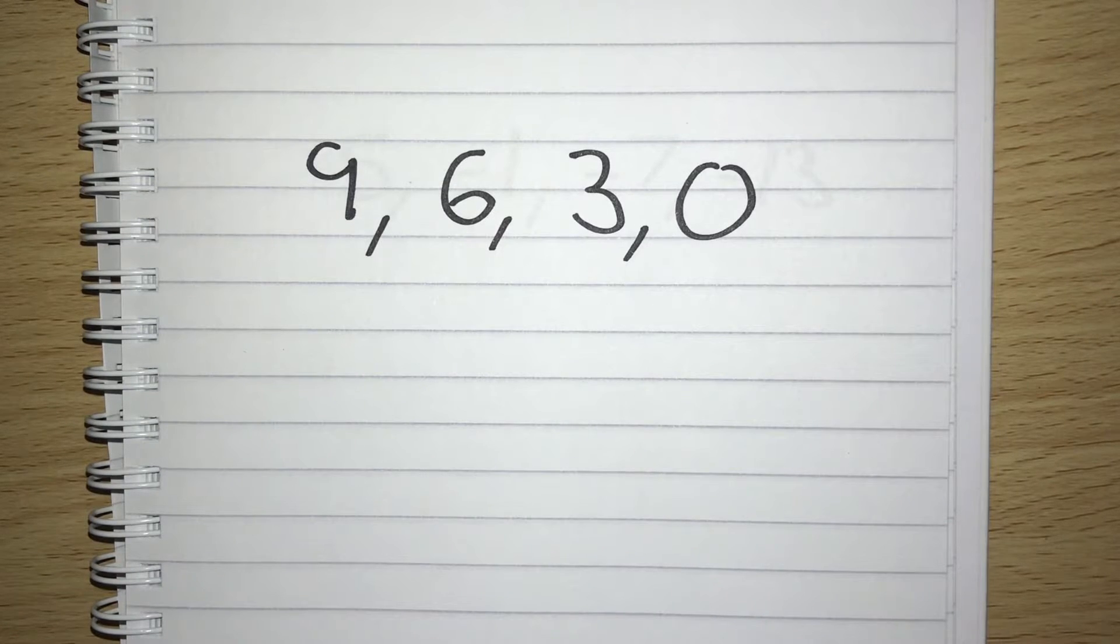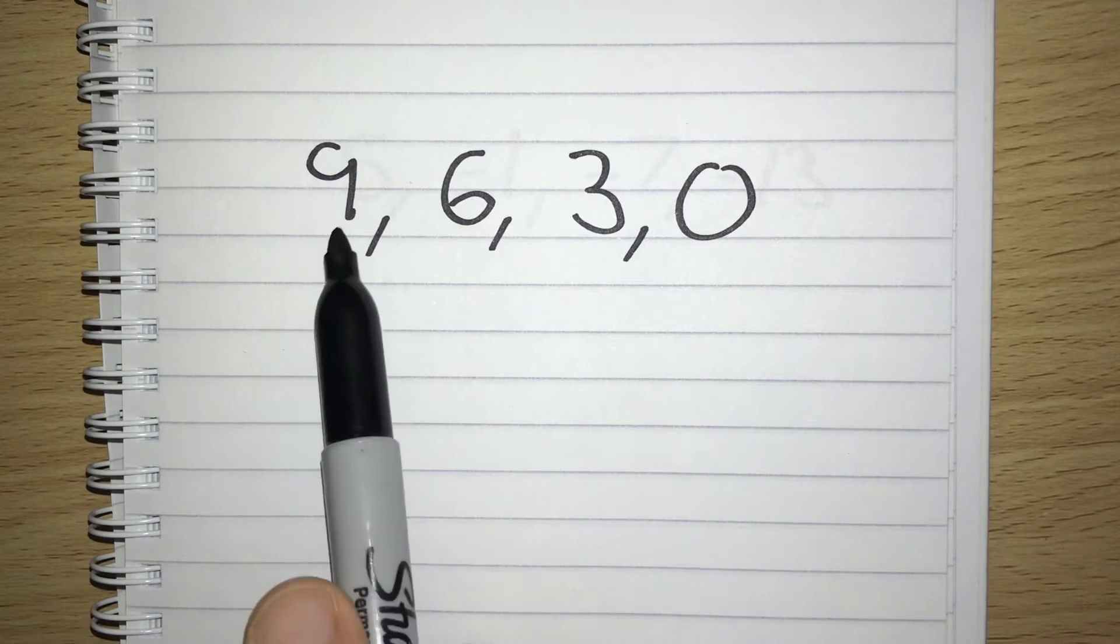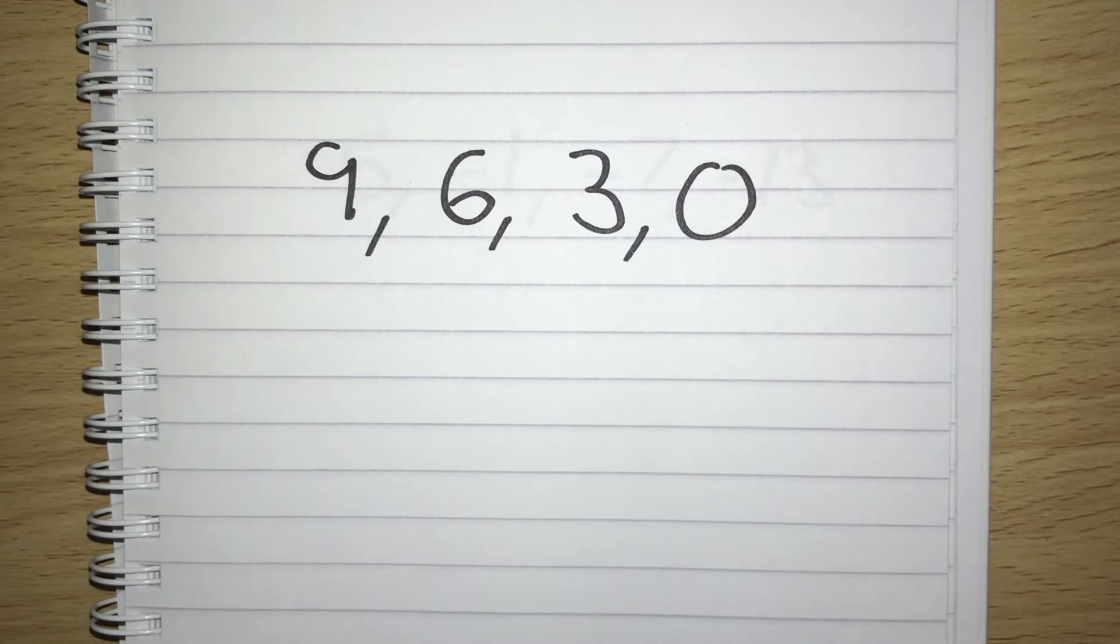In this video we're going to take a look at finding the nth term of decreasing linear sequences. So in this sequence we start with 9, 6, 3, 0.